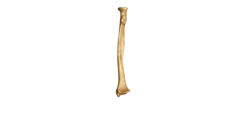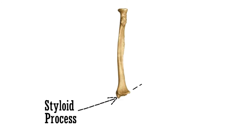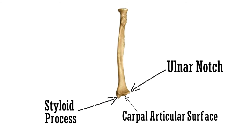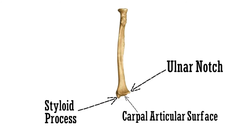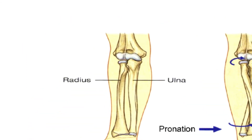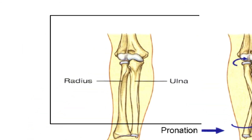Looking at all the parts of the distal end: the downward and outward projecting process is the radial styloid process, the notch on the medial end is the ulnar notch, and the carpal articular surface articulates with the scaphoid and lunate bones.